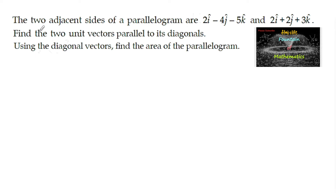The two adjacent sides of a parallelogram are 2i - 4j - 5k and 2i - 2j - 3k. Find the two unit vectors parallel to its diagonals, and using the diagonal vectors, find the area of the parallelogram.